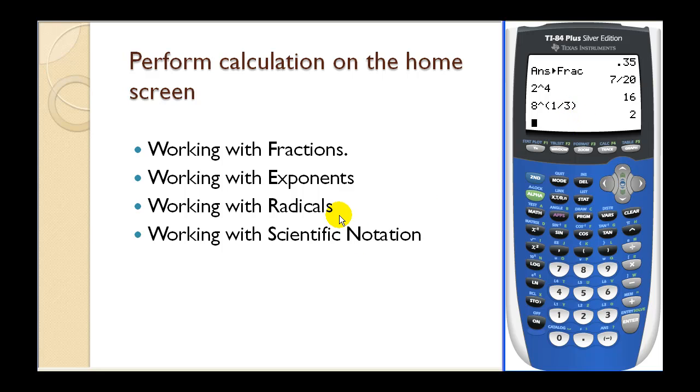Next, let's take a look at radicals. Let's start by talking about the square root. The square root you can see right above the x squared key. So if I press second x squared, it brings up the square root, then I type in the radicand, close the set of parentheses, press enter, and that will give us the square root.